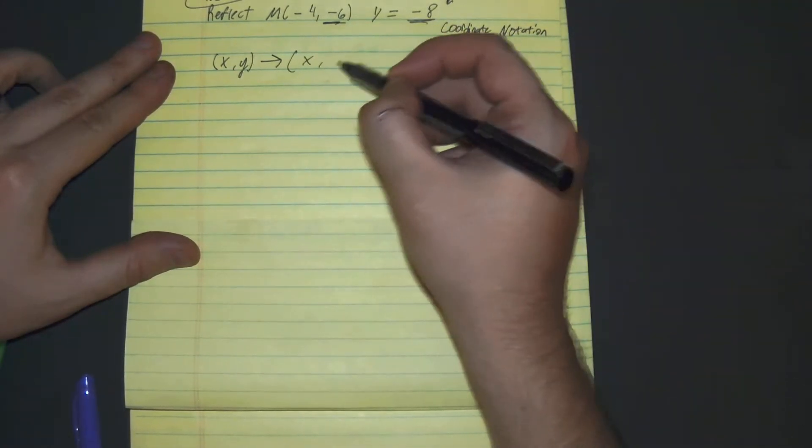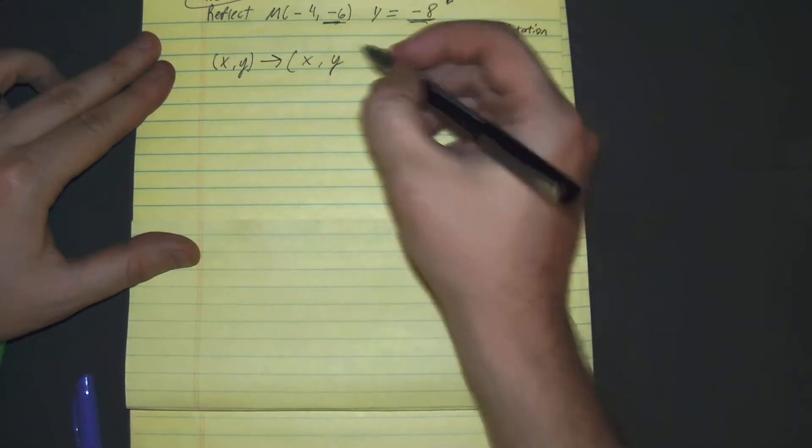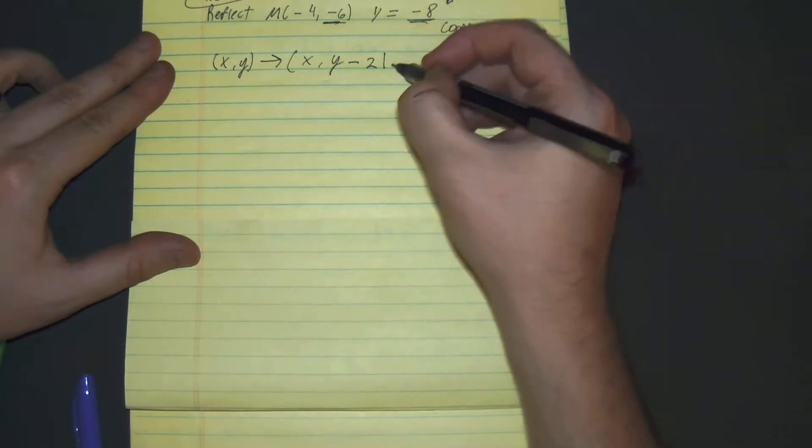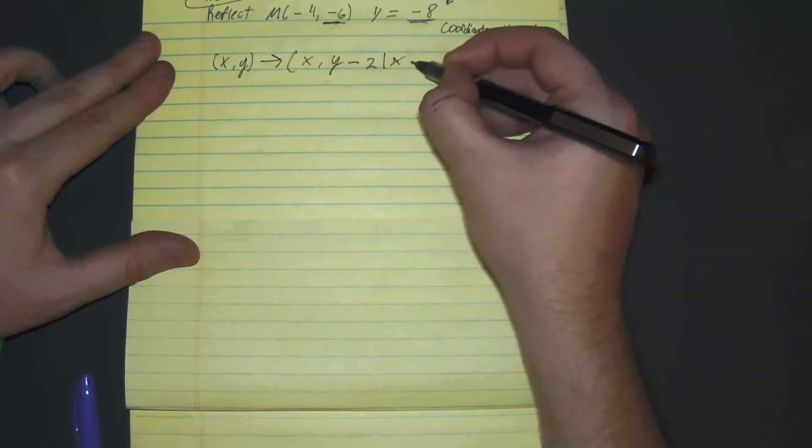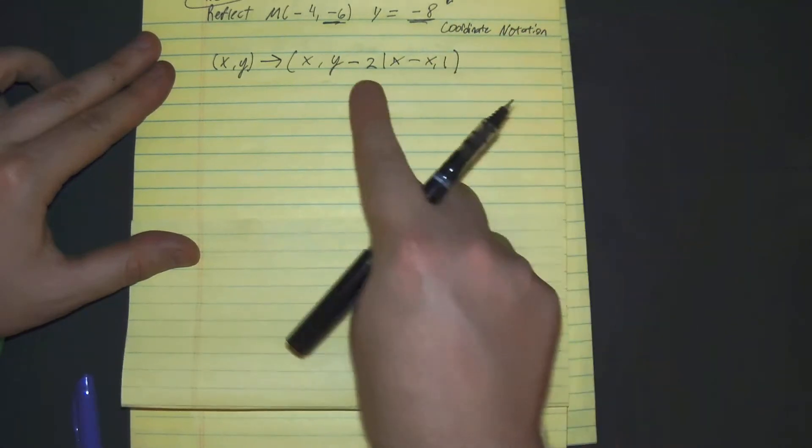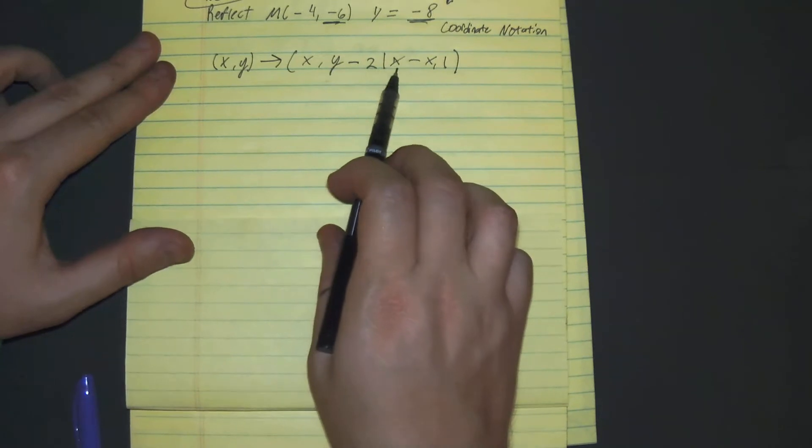So it would be (x, y). And since it's getting more negative, it would be minus 2 times the absolute value of y minus y sub 1. We'll use the absolute value to represent the distance between the point and the line.